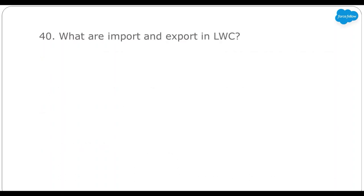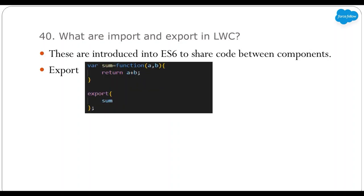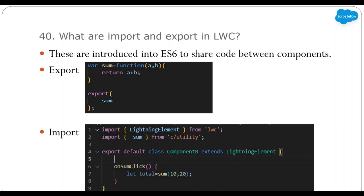Next: what are import and export in LWC? These features are not specific to LWC — they were introduced with ES6. With these features, we can share JavaScript code among multiple components. For example, if you want to write a method or property used in multiple places, you can create a JavaScript module. Export makes a function or property available outside the module, and import allows you to use it in another component, as shown in this example where a sum method is exported and then imported on line 2 and used on line 7.